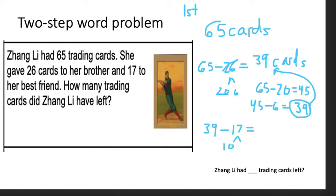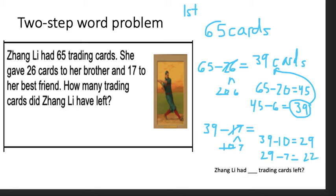So, 39 minus 17. Let me take a 10 and a 7 out. 39 minus 10 — what's that? 29. Now the only thing left in that part is a 7. So, 29 minus 7 — what's that? Tell me, what is it? 22. So that is our final answer. Zhang Lee had 22 trading cards left.